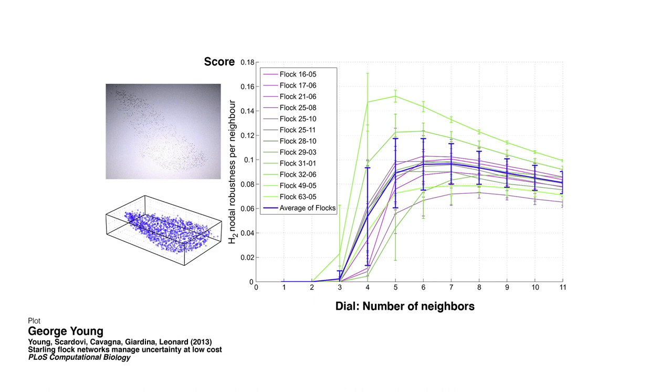The scientists who filmed and studied the starlings showed that every bird pays attention to its seven closest neighbors, but it was not clear why the number seven. With my research group, we hypothesized that seven might be the dial setting that best balances the explore-exploit tension. Using the mathematics, we derived a score that quantifies how well a group balances the tension given a snapshot of the birds and a dial setting. Using over 400 snapshots and a dozen dial settings, we found that the score was greatest when each bird pays attention to its six or seven closest neighbors, which matches the number found by the scientists and provides evidence in support of our hypothesis.